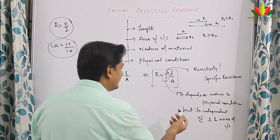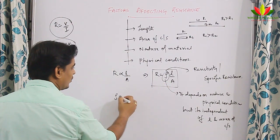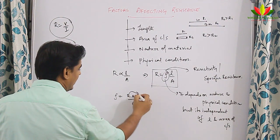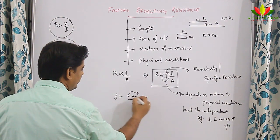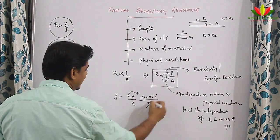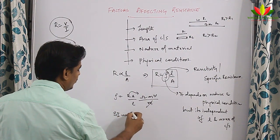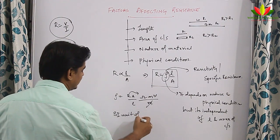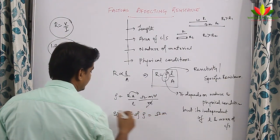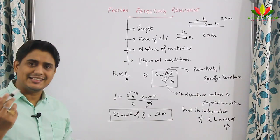From the formula R equals rho L by A, we can rearrange to get rho equals R times A by L. R is in ohms, area is in meter squared, length is in meters — meter squared divided by meter gives meter, so the SI unit of resistivity is ohm·meters.